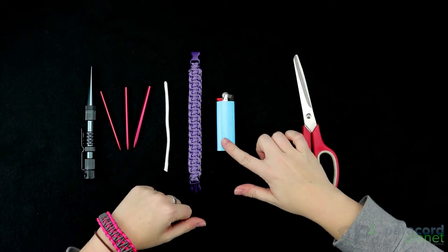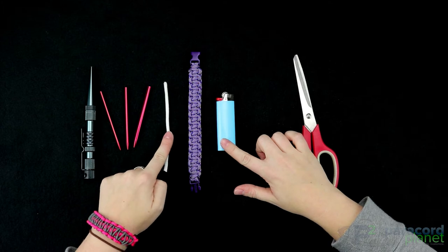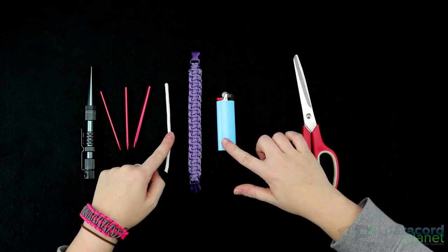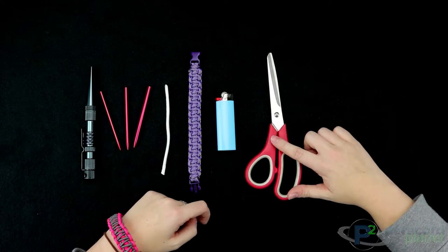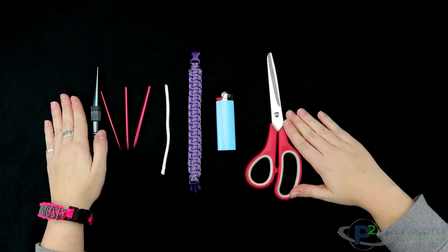Next, you'll need a lighter, and this will be to melt the ends of our scrap cord once it's woven into the bracelet as an awareness ribbon. And then finally, you're going to want a pair of scissors to cut your cord once we weave it into the bracelet.